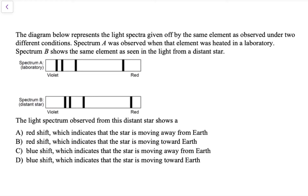Let's look at a practice Regents problem related to this idea. The problem says the diagram below represents the light spectra given off by the same element as observed under two different conditions. Spectrum A was observed when that element was heated in a laboratory. Spectrum B shows the same element as seen in the light from a distant star. We have to compare the spectrum of the star to the spectrum in the laboratory. We see that same pattern — four black lines — and the lines are shifted slightly to the right, or shifted to the red end of the spectrum.